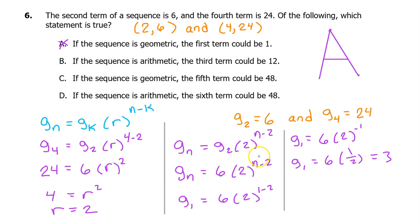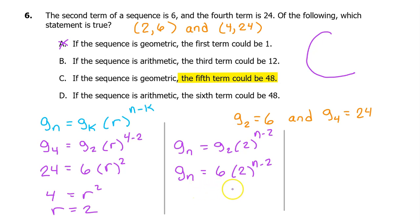While we are in geometric mode, let's go ahead and check option C. The only part that will change is the part at the end. Let's see if the fifth term could be 48. So that would mean that G_5 would equal 6 times 2 to the (5 minus 2) power. Therefore, G_5 would equal 6 times 2 to the 3rd power. 2 to the 3rd power is 8. And 6 times 8 is 48. So the answer is C.